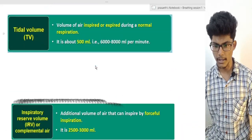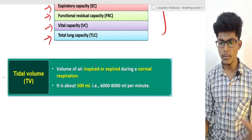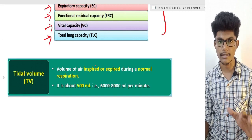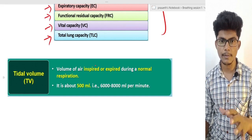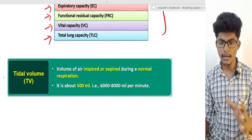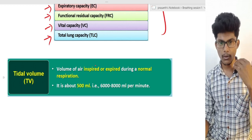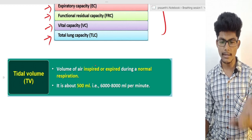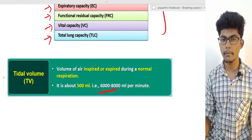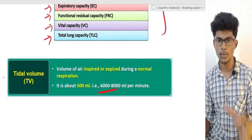First, Tidal Volume. This is a normal respiration — the volume of air we inhale or exhale during normal breathing. How much volume of air can be used? That is Tidal Volume. Approximately, we can inhale or exhale around 500 mL — that is Tidal Volume.